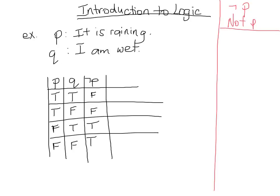The next symbol is the AND symbol. Whenever you see that symbol between two propositions, it means P and Q. For P and Q to be true, both must be true. In the first row, P is true and Q is true, which means P and Q is true. However, in no other case are they both true, so all others are false.